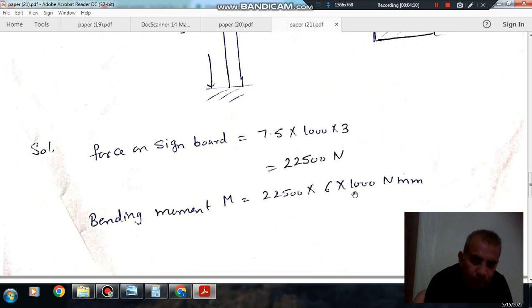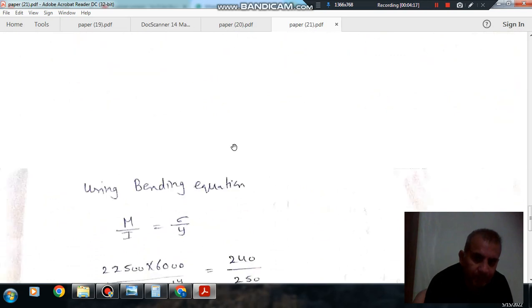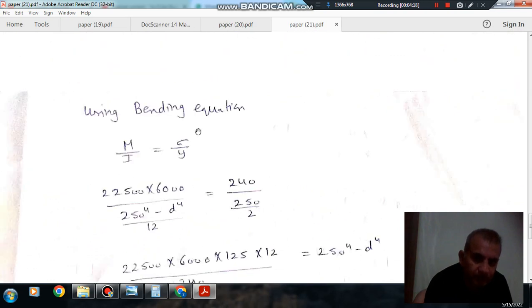Moment is 22,500 into 6 into 1000 Newton mm. So that is moment, bending moment. And using bending equation M by I is equal to sigma by Y.